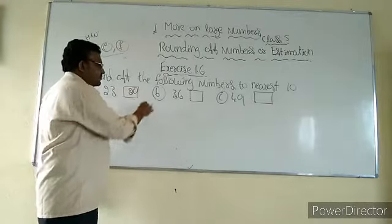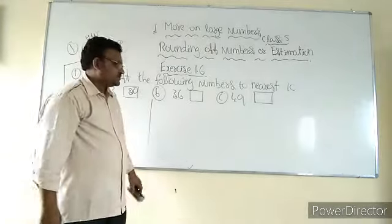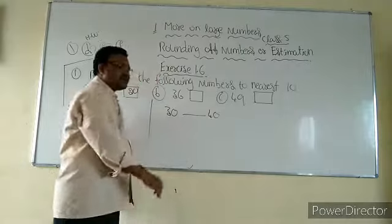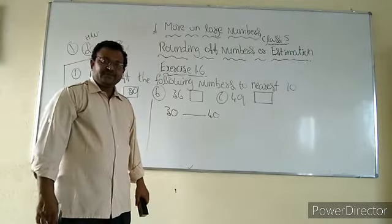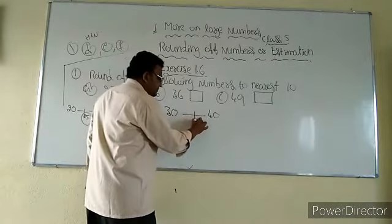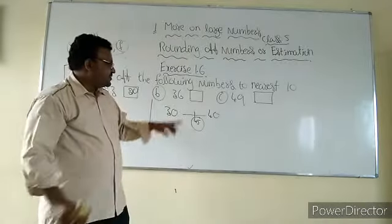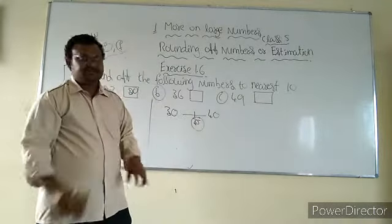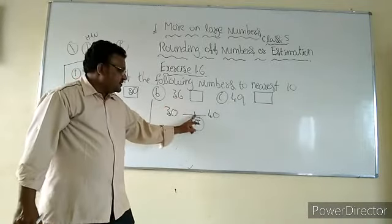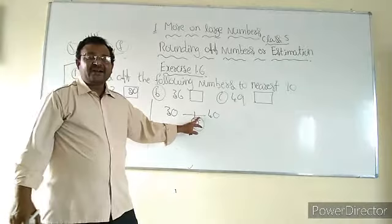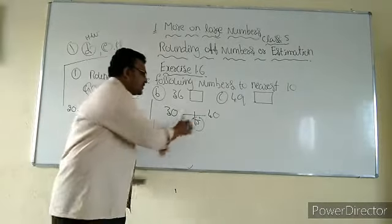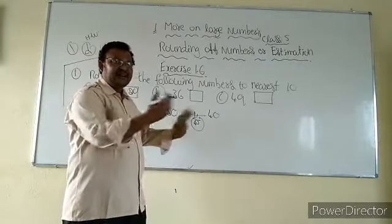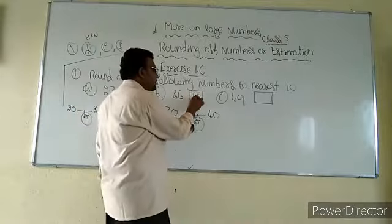Next, 36. 36 is in between two tens — 30 and 40. The halfway between 30 and 40 is 35. Now observe 36: it is in the part of more than halfway. More than halfway means we have to round up the given number to the next ten, that means 40.